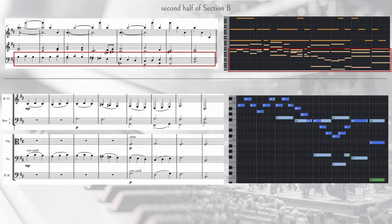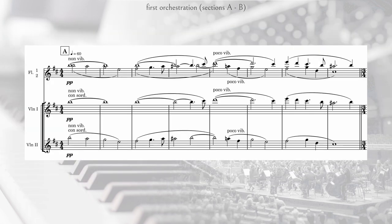Then bassoons, violas, and basses have the remaining sustaining background parts. Okay, so overall, I think this first orchestration was very simple and straightforward. I didn't try to do anything too advanced, but I think it still sounds nice and accomplishes my goal of slowly building this very simple texture up from the beginning.